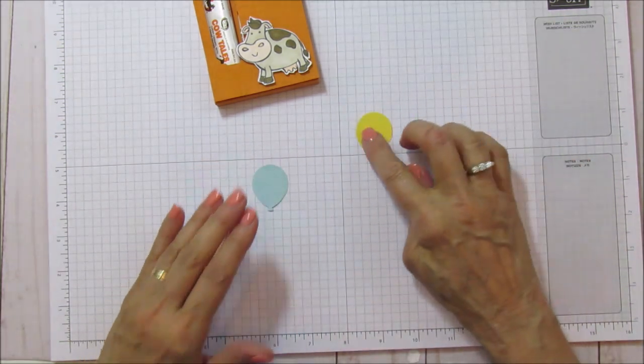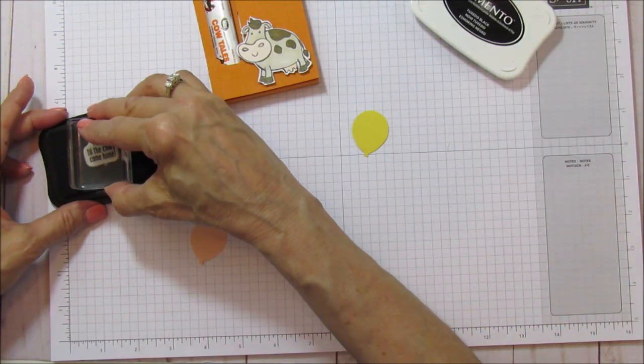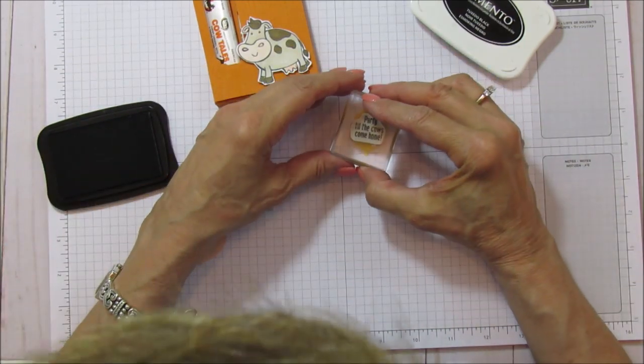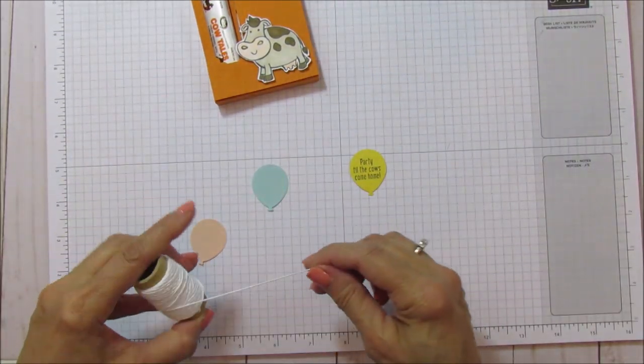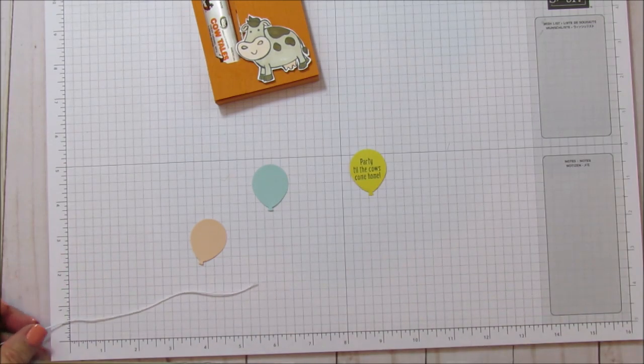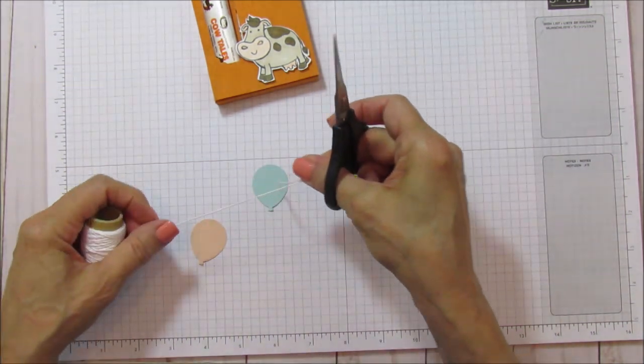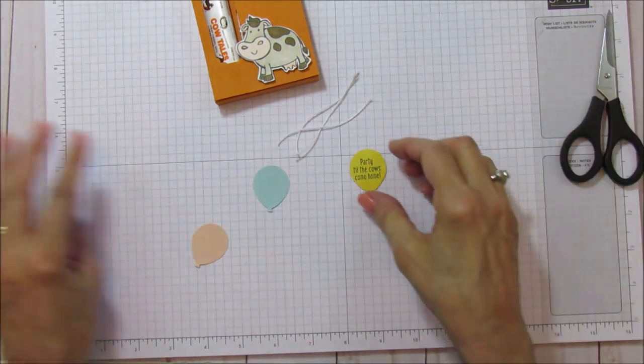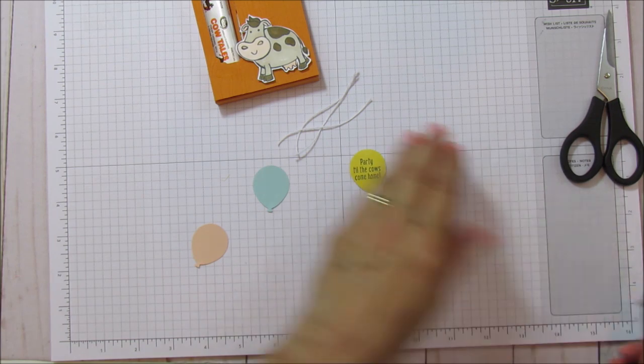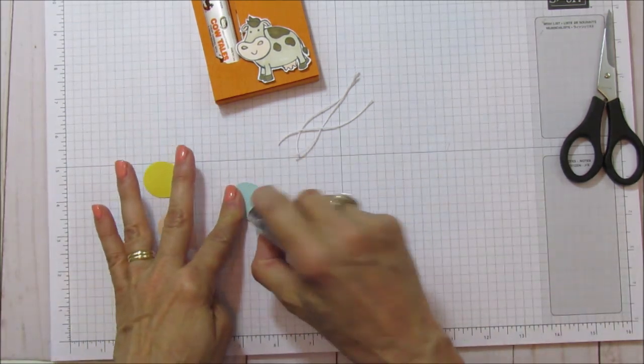And we're going to stamp on this little balloon here. We're going to stamp the party till the cows come home with the memento black. And then I'm using Baker's twine, which I believe I cut two inches. Let's do two and a half. So just cut three pieces all the same length.